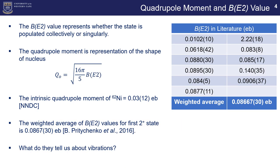All right, so now we can take a look at the B(E2) value on the quadrupole moment and what exactly this means. The B(E2) value is a representation on whether the state is populated collectively or singularly, which basically means whether one or multiple particles are excited to a higher state by one or multiple particles. The B(E2) value is related to the quadrupole moment via the equation that is represented on the screen, and the quadrupole moment is another representation of the shape of the nucleus. Now if we go to the intrinsic quadrupole moment for nickel 62, we seem to see that we have a value of 0.03 with an uncertainty of 12. This is a fairly large uncertainty and I'll make reference to it again a bit later.